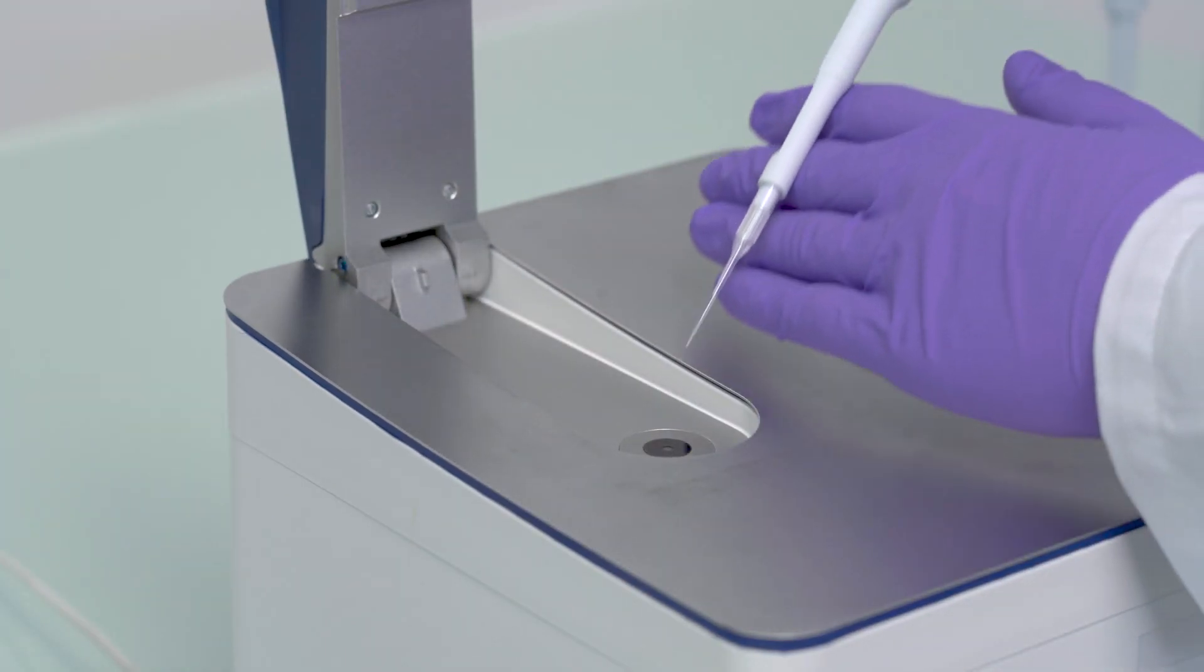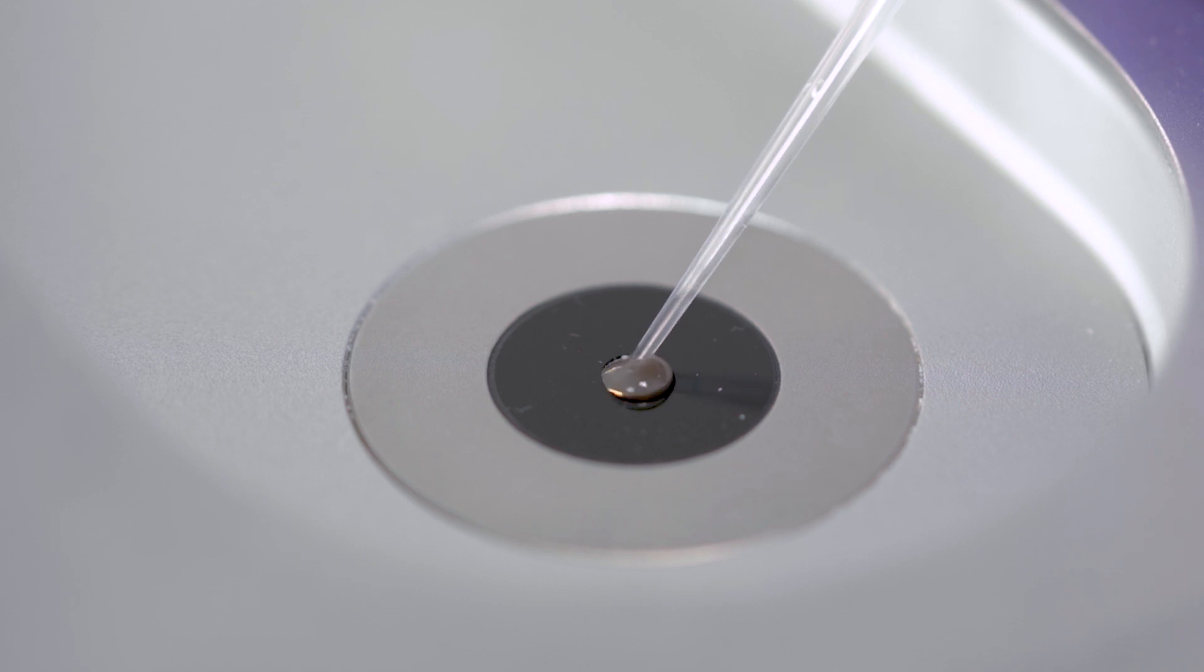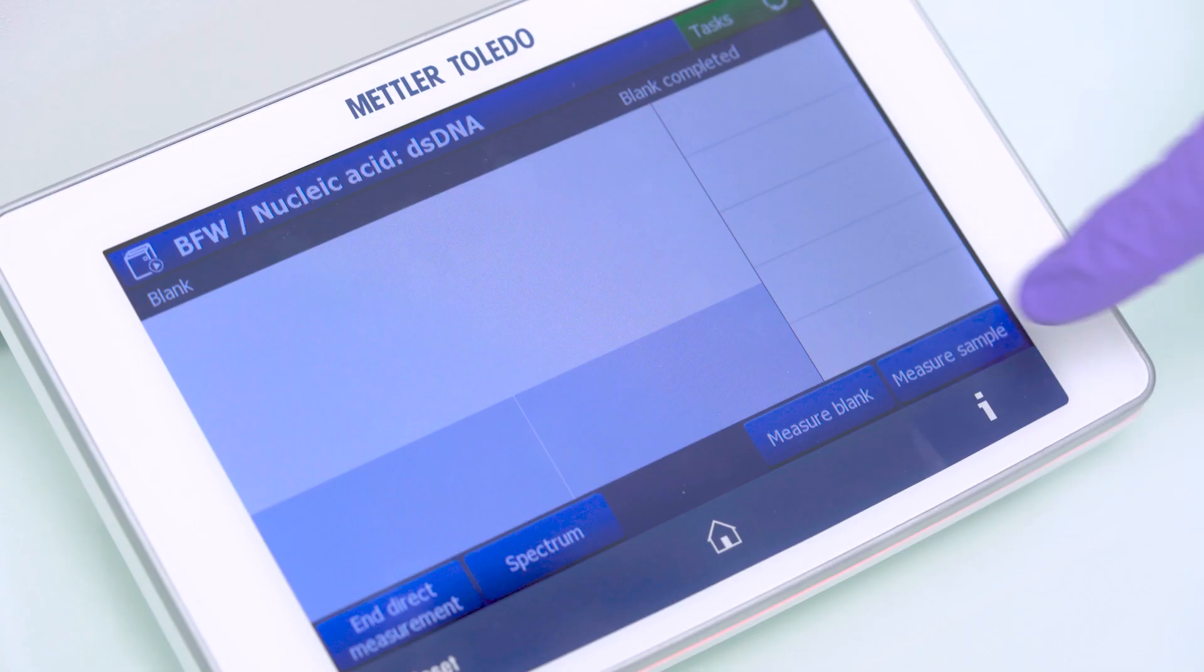Right now I will show you how easily such a purity measurement can be done. We pipette one droplet of our DNA sample onto the microvolume platform of the spectrophotometer, press start, and obtain the concentration and purity results directly on the display.